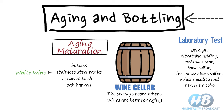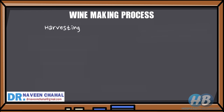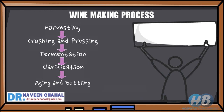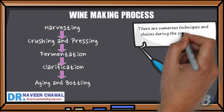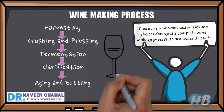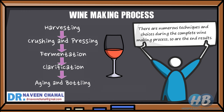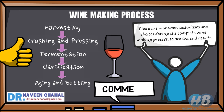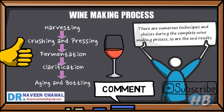If the results are not as expected, the winemaker can take action. Once aging is finished, the wine is bottled with a screw cap or cork. There are numerous techniques and choices during the complete winemaking process, and so are the end results. In the end, it's the choice of the winemaker. I have provided you the basics of the winemaking process; however, the common result is the same — that is, wine. I hope you liked the video. If you did, hit the like button. For any doubts or suggestions, comment down below, and don't forget to subscribe to Hospitality Broadcast. Thank you for watching.